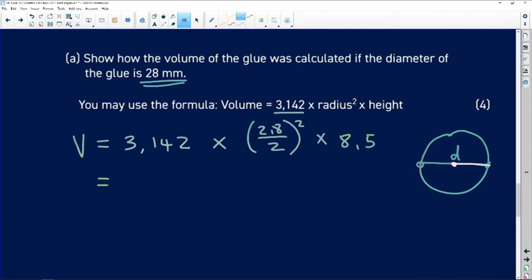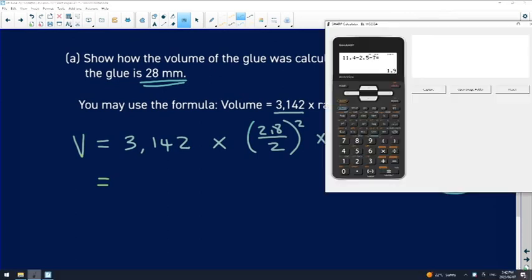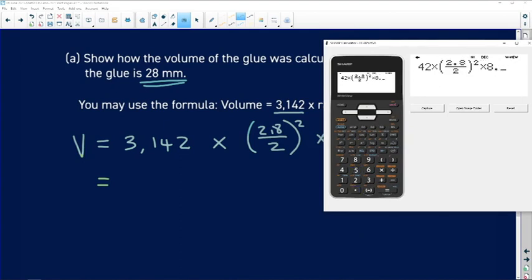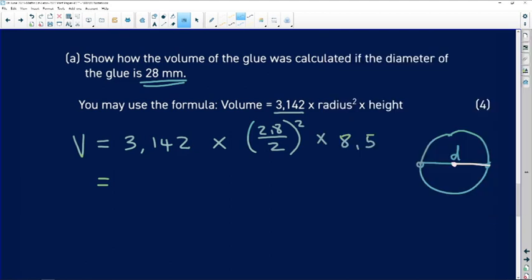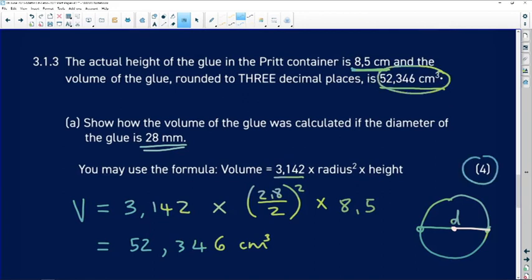Let's go put that into our calculator. So 3.142 times 2.8 all over 2 squared. You need to know how to use your calculator, right? You can't be using it the first time times 8.5 in an exam. That's 52.346. I'm doing it to three decimal places because we were also given to three decimal places. 52.346 centimeters cubed, which is the same as that. So you get all four of your marks.